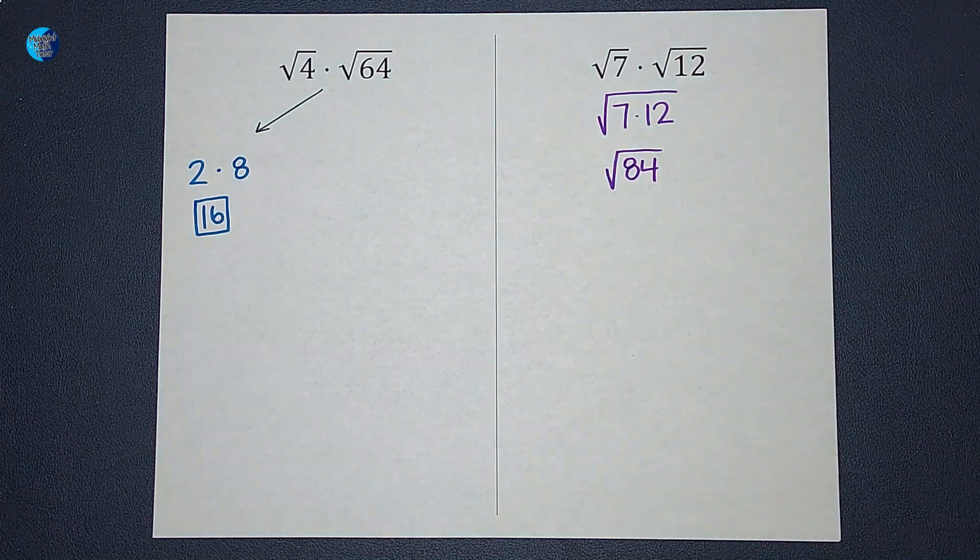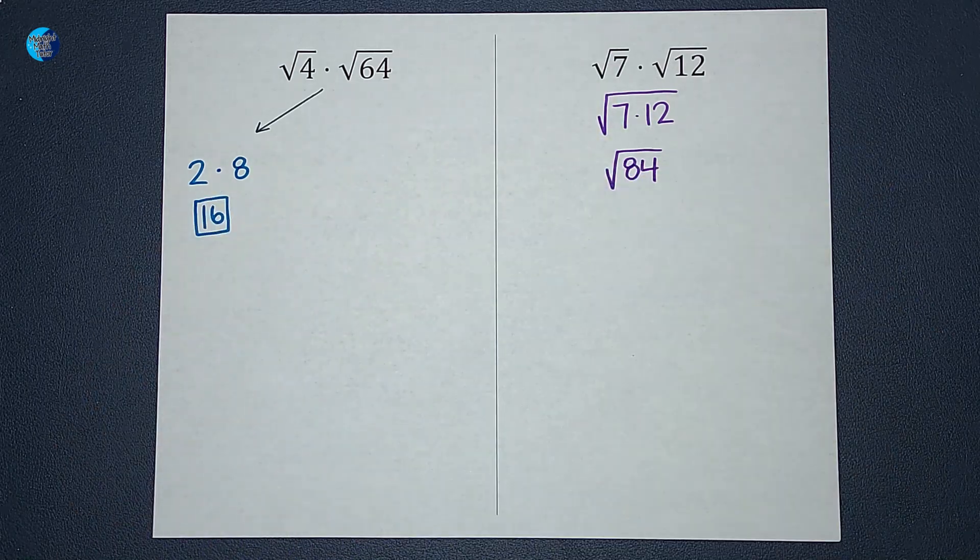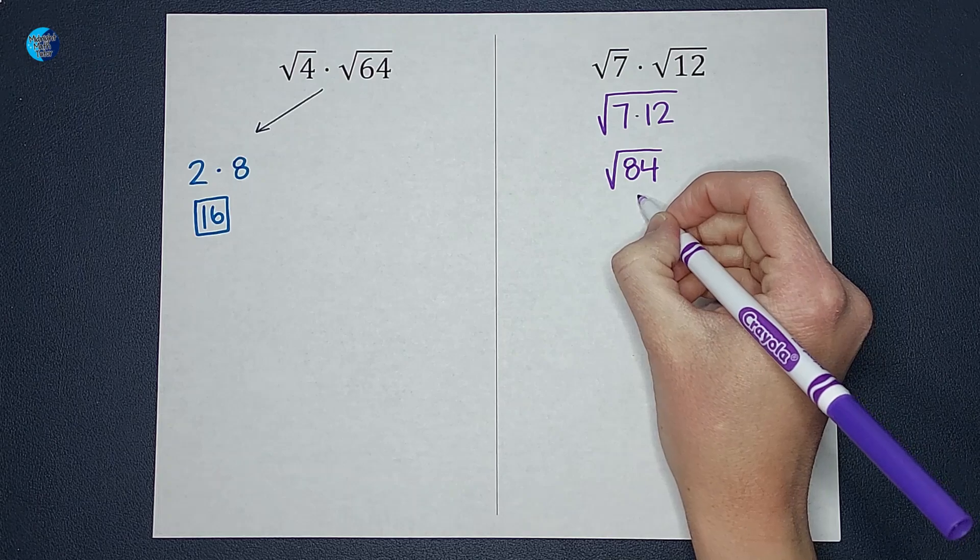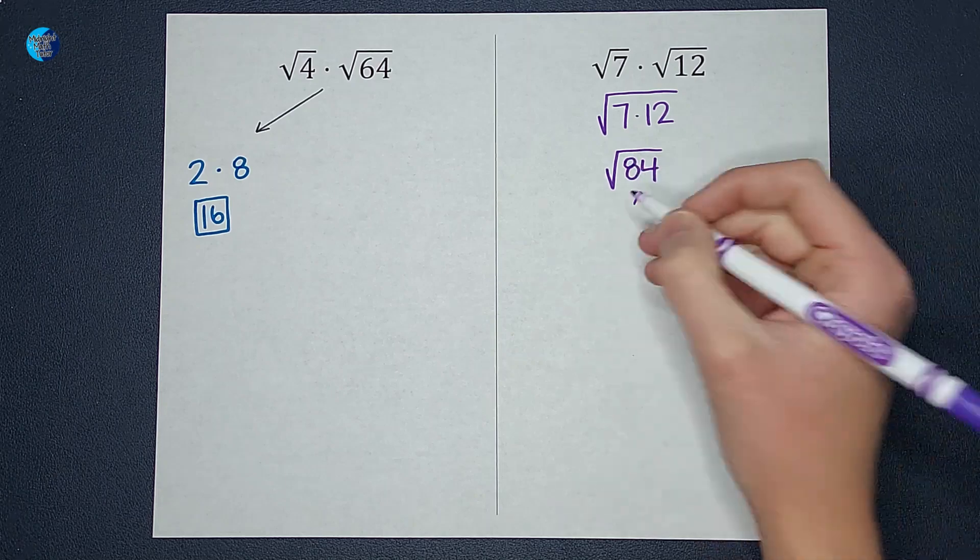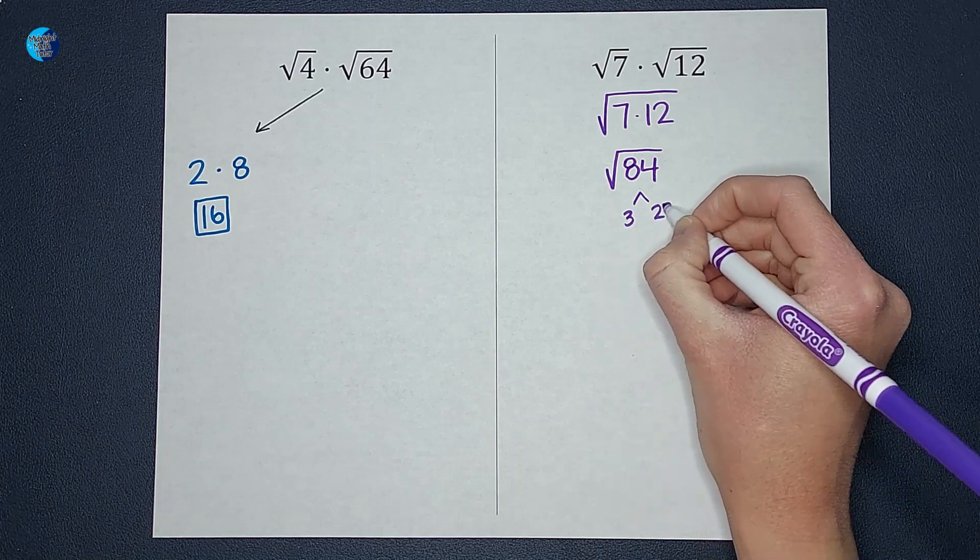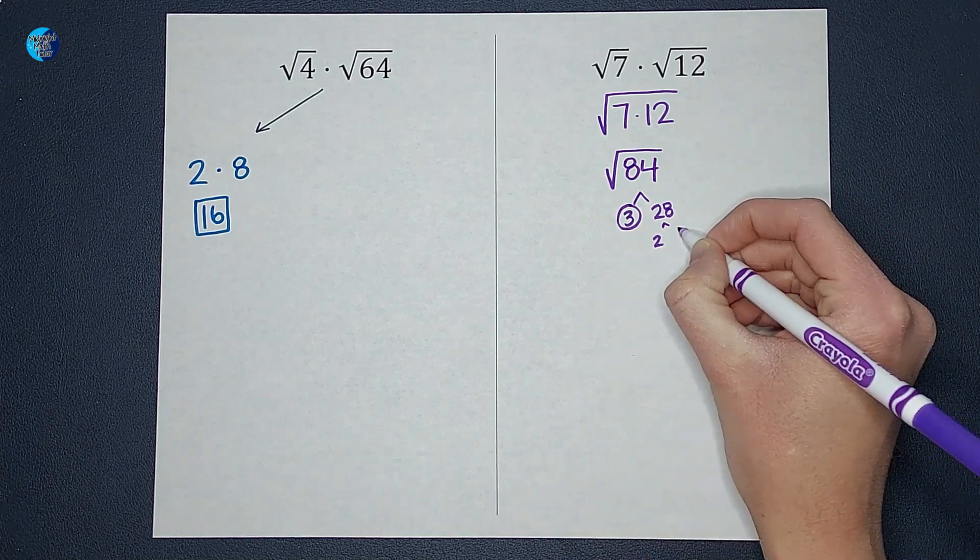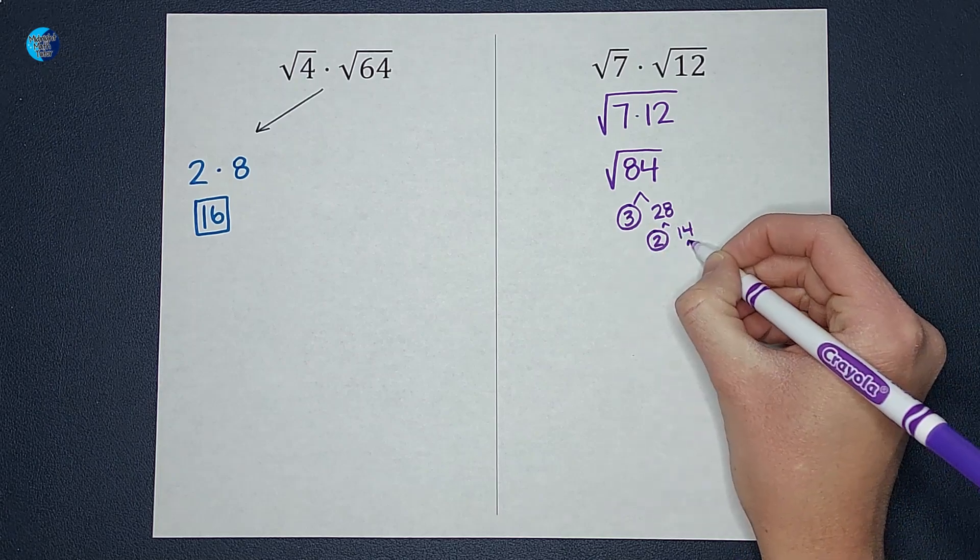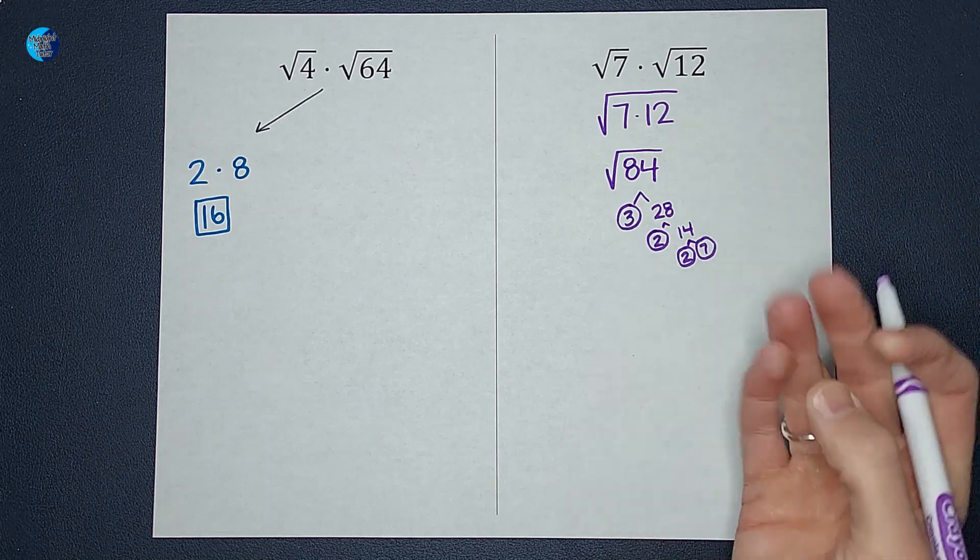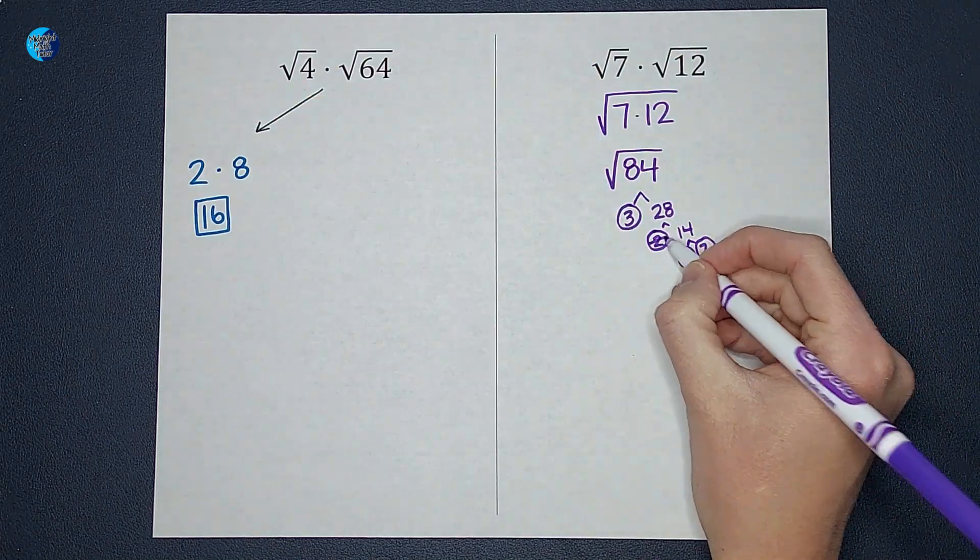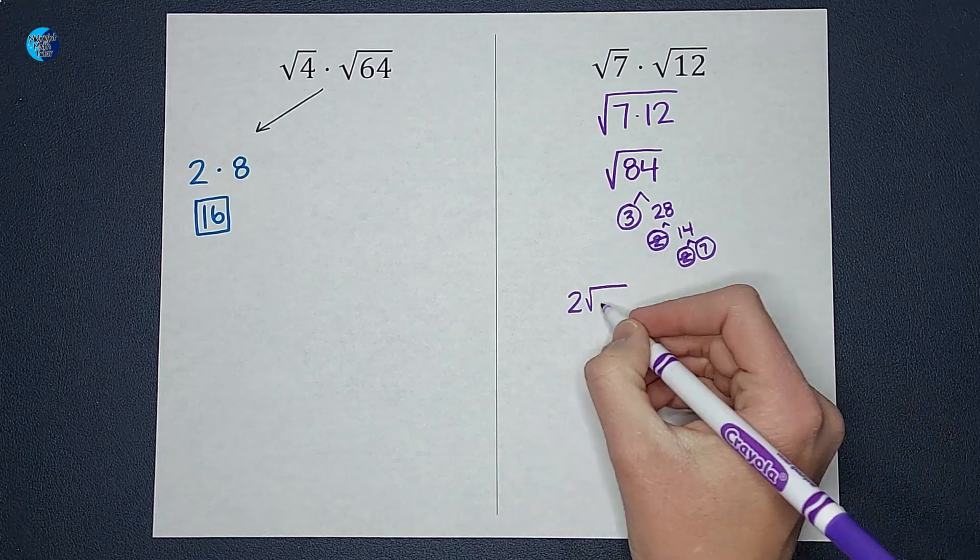The square root of 84 isn't a pretty number, but we can simplify this. When we simplify this, we're going to do the prime factorization. What two numbers can multiply to get 84? Two of them could be 3 and 28. I circle any prime numbers I get, so 3. Then 28 could be broken into 2 and 14. 2 is prime. And then 14 can be broken into 2 times 7. 2 and 7 are both prime. Any doubles I see, I pull to the outside of the square root. So I pulled that out to have a 2 outside. What is left under the square root is 3 times 7 or 21.